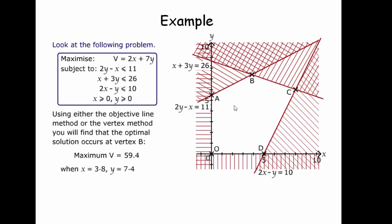This example here we can see we've got our feasible region. It's a polygon, in fact it's a pentagon, with five vertices.